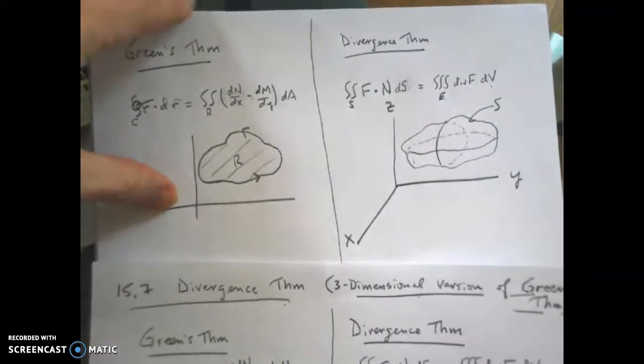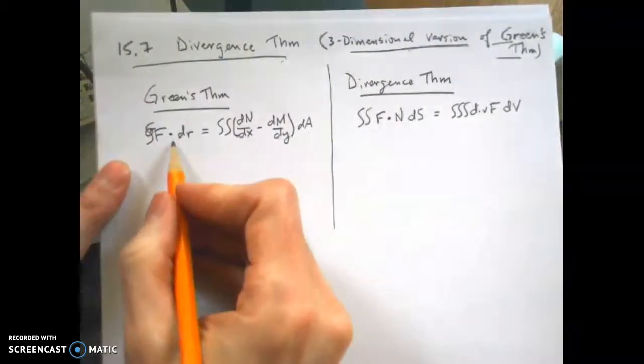This thing, E, is sometimes called a three-dimensional solid because you're integrating the triple integral of the divergence of F over that entire solid, and then this would be the surface, that surface that encloses the region. So let's go back to the formulas.